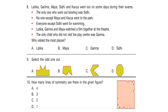Question 9. Select the odd one out. Options are given; choose which is the odd one out. Question 10. How many lines of symmetry are there in the given figure? Look at the figure and try to find out the lines of symmetry.